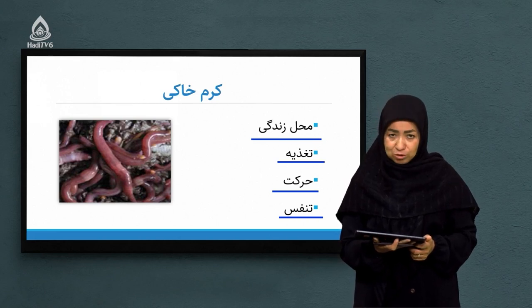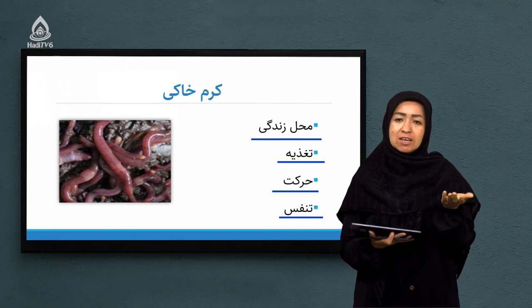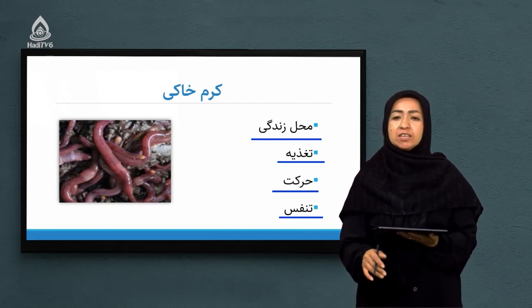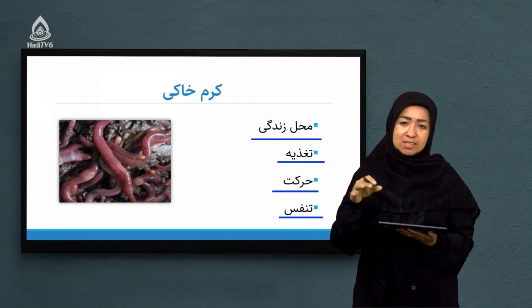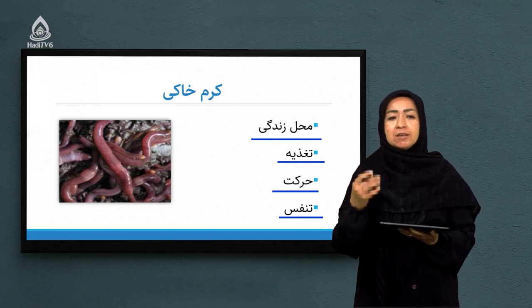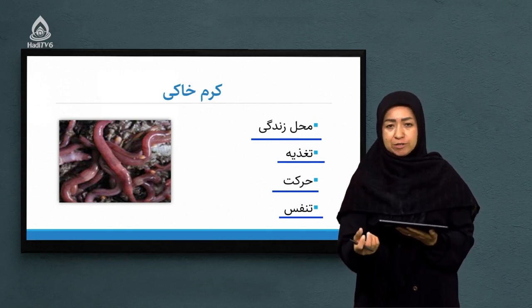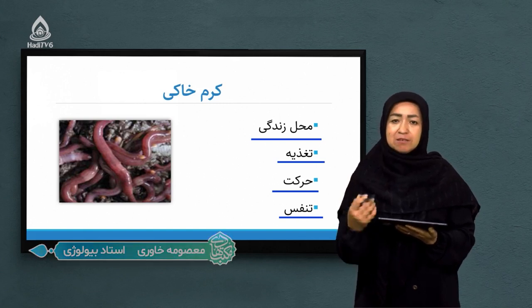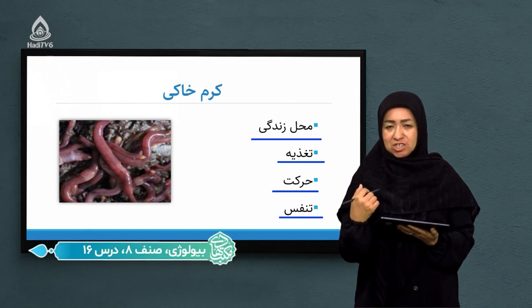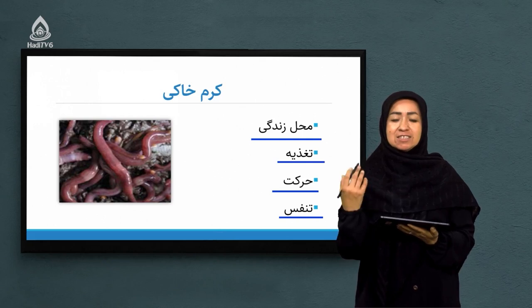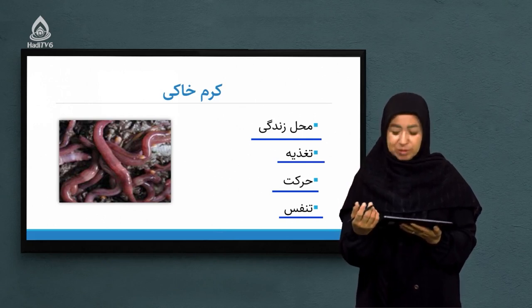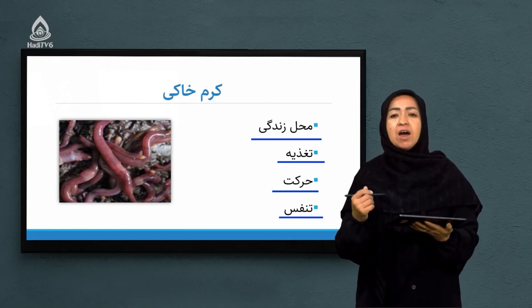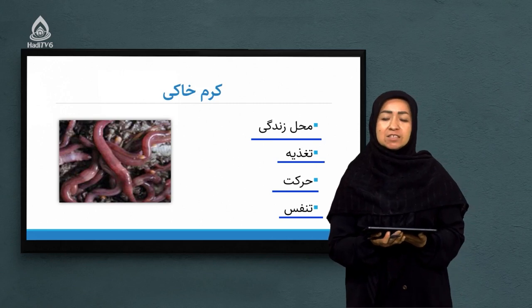شبانه برای تغذیه، کرم خاکی بیشتر به خاک‌های مرطوب می‌رود. چون سطح خاک از قسمت‌های عمقی مرطوب‌تر است، شبانه این کرم به سمت بالا حرکت می‌کند. در آنجا برگ‌های افتاده از درخت‌ها را به کمک خاک اطرافش می‌خورد. موادی که نیاز دارد از این برگ‌های پوسیده جذب می‌کند و خاک را از طریق سیستم دفعی خودش دفع می‌کند. این کار بسیار در کشاورزی اهمیت دارد.